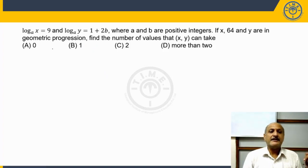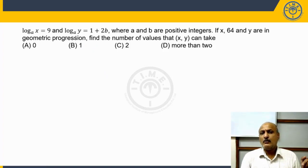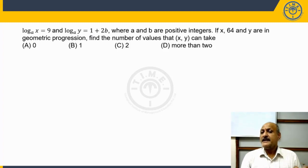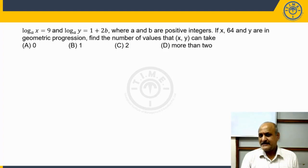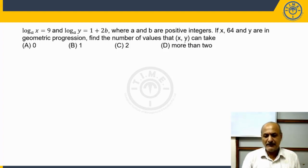Please observe this carefully. It reads: log x to the base a is equal to 9, log y to the base a is equal to 1 plus 2b, and a and b are positive integers. It says if x, 64, and y are in a geometric progression, find the number of values that the set (x, y) can take.